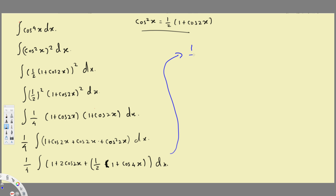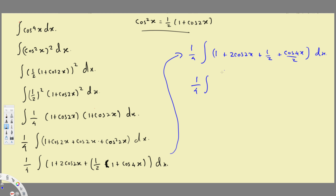Simplifying: multiplying through by one half gives one half, and one half times cos 4x gives cos 4x over 2. Adding 1 and one half together gives 3 over 2. So this becomes one over 4 times the integral of (3 over 2 + 2 cos 2x + cos 4x over 2) dx, which is now straightforward to integrate.